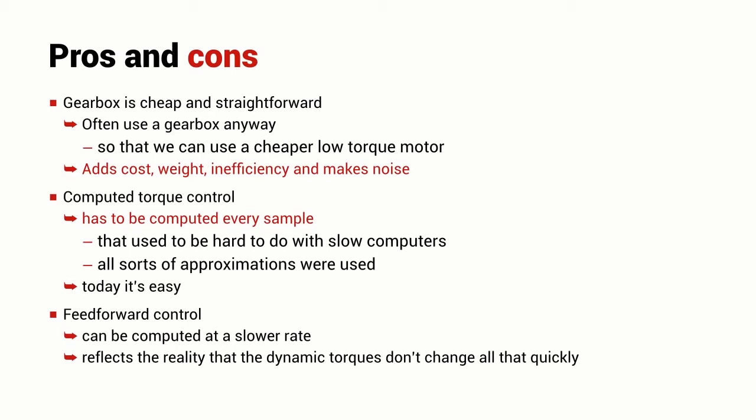The feed forward control can actually be computed at a slow rate and that reflects the reality that the dynamic torques don't actually change all that much from one sample time to the next. So, the feed forward control signal can be computed at perhaps fifty hertz or a hundred hertz, while the main control is implemented at something like one thousand hertz. They don't have to be computed at the same rate.